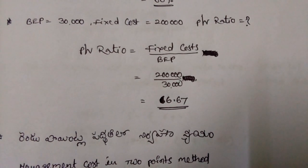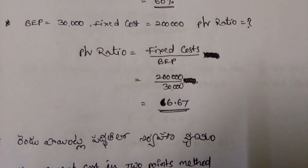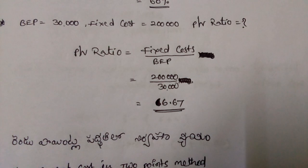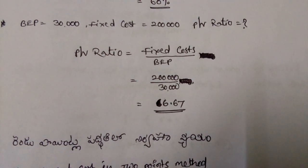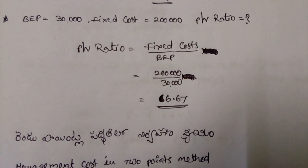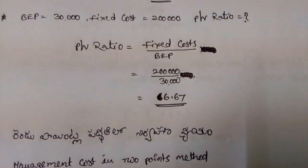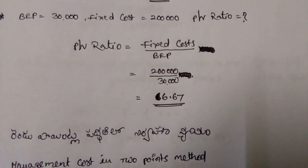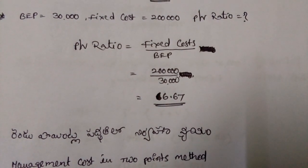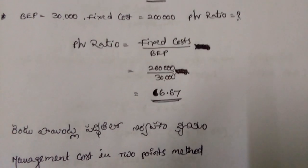And one more problem: BEP equals to 30,000, Fixed Cost equals to 2 lakhs, calculate PV Ratio. So here PV Ratio equals to Fixed Cost by BEP only. Then 2 lakhs by 30,000, that equals to 6.67.